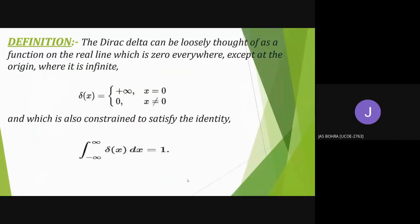The definition of the Dirac delta function states that it is a function on the real line which is zero everywhere except at the origin, where it is infinite. That is, delta(x) equals infinity when x equals zero, and delta(x) equals zero when x is not equal to zero. Therefore, the integration of delta(x) dx from negative infinity to infinity is equal to one.